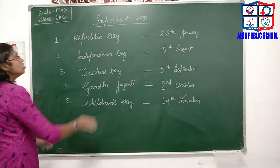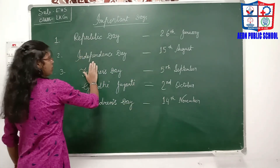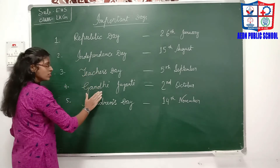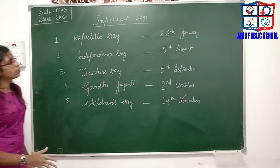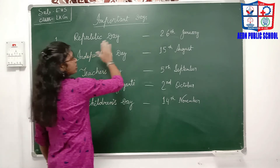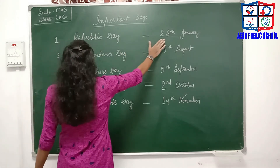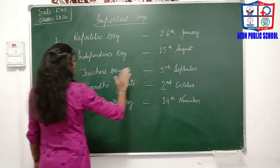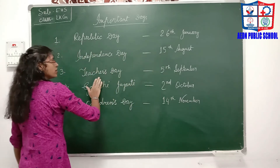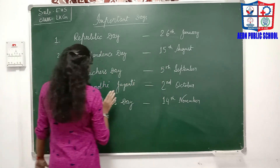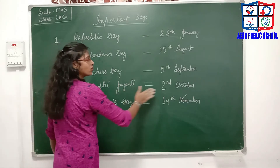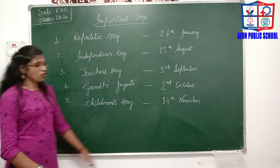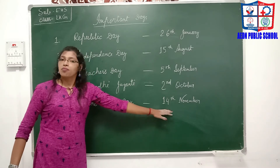The important days are: Republic Day, Independence Day, Teacher's Day, Gandhi Jayanti, and Children's Day. Republic Day is celebrated on 26th January. Independence Day is celebrated on 15th August. Teacher's Day is on 5th September. Gandhi Jayanti is on 2nd October. And Children's Day is on 14th November.